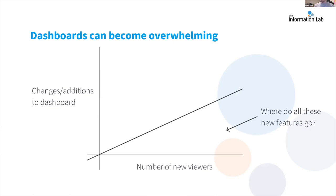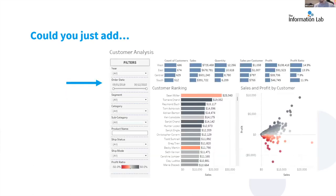But then that team comes back to you and says, could you just add a few more details for us so we can use this in our day-to-day work? Because I want one dashboard to serve as many people as possible. But the problem is, where do you put all these new features? And inevitably they go in that filter panel on one side, which you then start just cramming with all the different filters, all these different teams. As an example, the product team have come along so I've added another three filters for them, and the shipping team have come in, about another two for them.